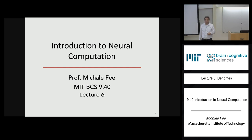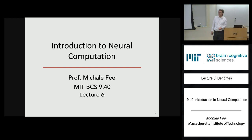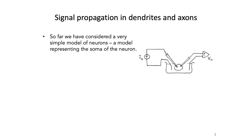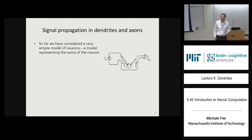Today we're going to start a new topic. We're going to be talking about the propagation of signals in dendrites and axons. The model we've considered so far is just a soma — basically a spherical shell of insulator with different kinds of ion channels that allow the cell to generate an action potential.